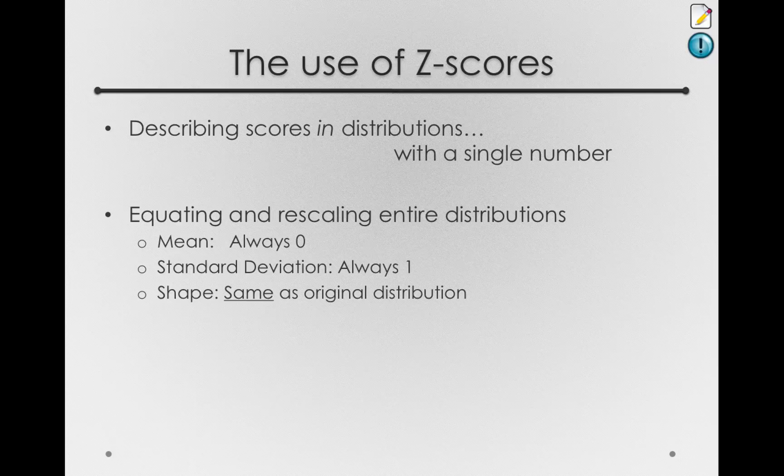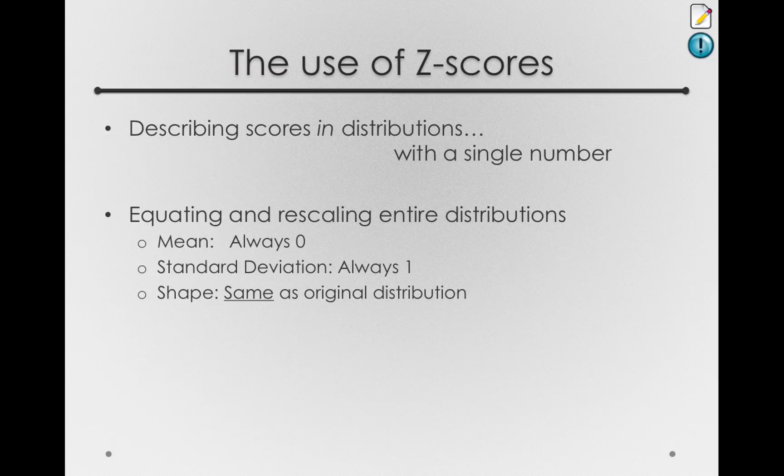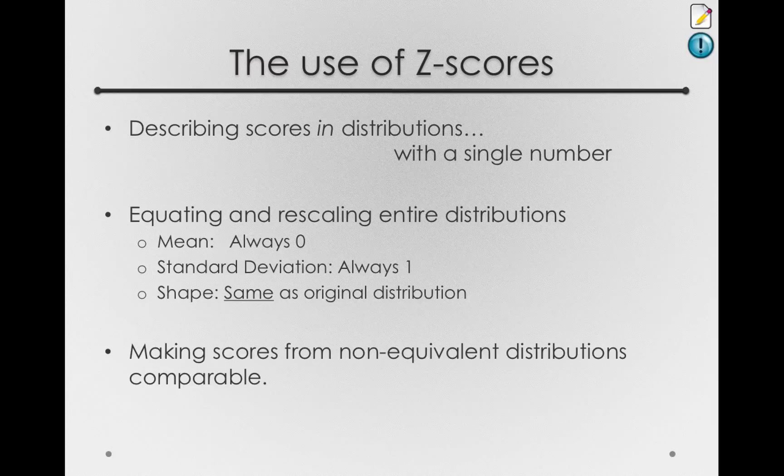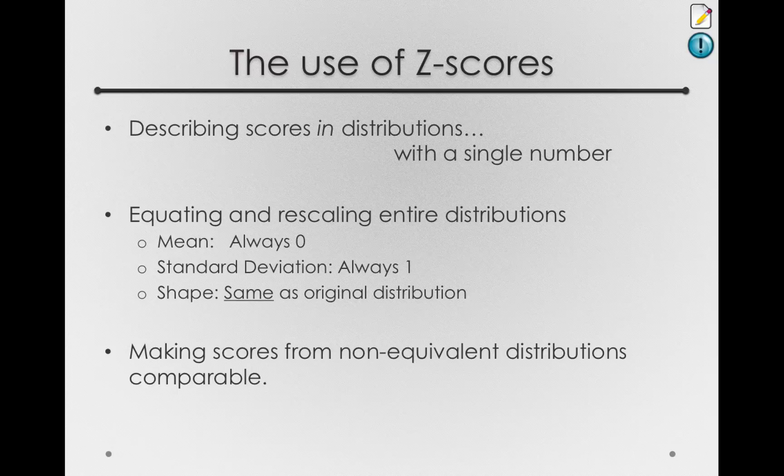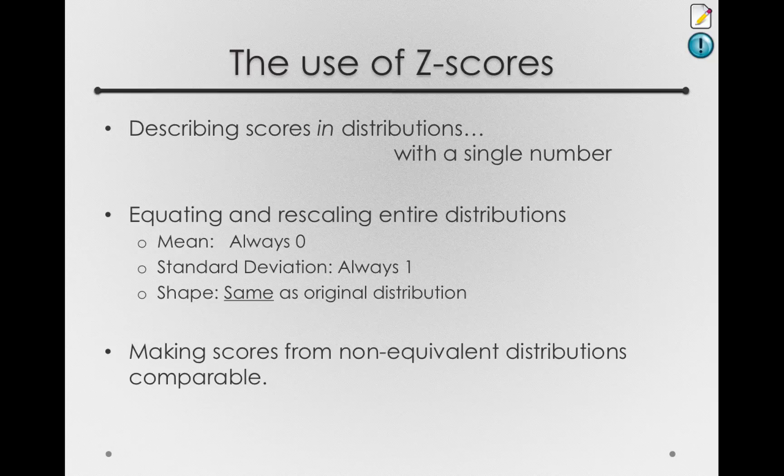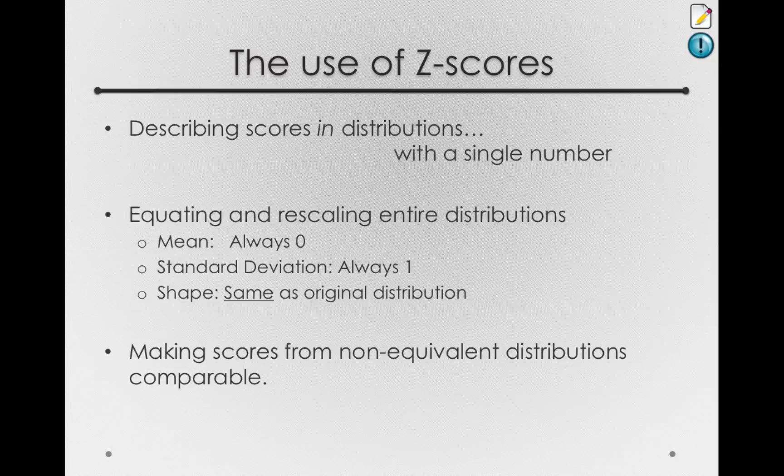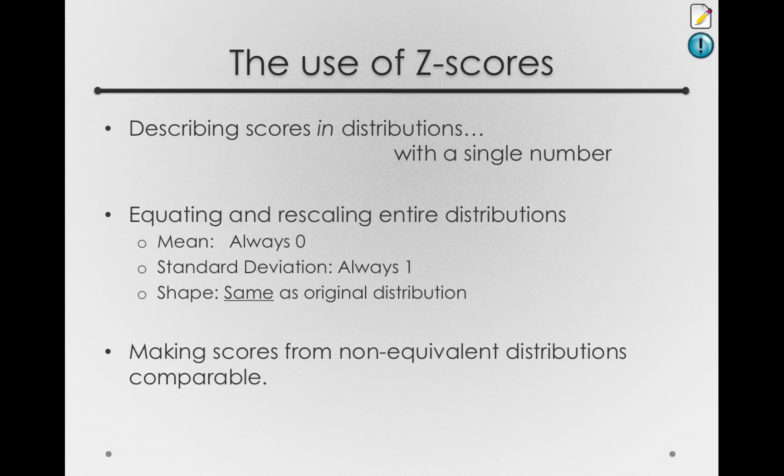In total, this z-scoring, or standardization, makes scores from non-equivalent distributions immediately comparable. That is, if I talk about you being a z-score of 1 in the height and weight distributions, distributions that have very different means and standard deviations, that still means the same thing. It means you are 1 standard deviation above the mean in height, and 1 standard deviation above the mean in weight.